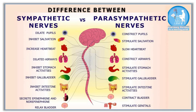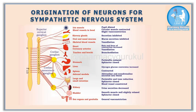Hi friends. In this presentation I will discuss the main differences between sympathetic and parasympathetic nervous system. Please note that both the sympathetic nervous system and parasympathetic nervous system are the main divisions of the autonomic nervous system.